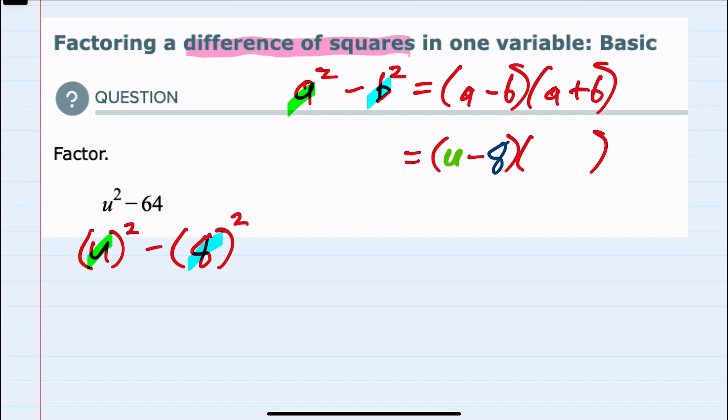And then the second term, our a is still u. And this time we have a plus b, which is 8.